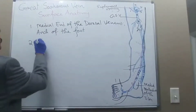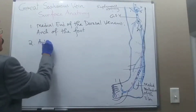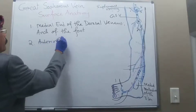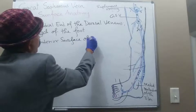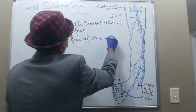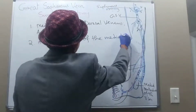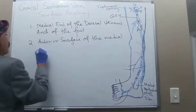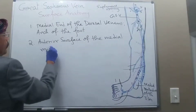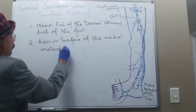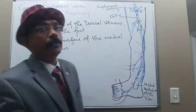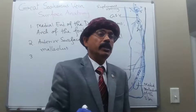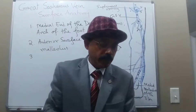The second point is the anterior surface of the medial malleolus. You can easily palpate the medial malleolus, and we go to the anterior aspect of the medial malleolus as point two.